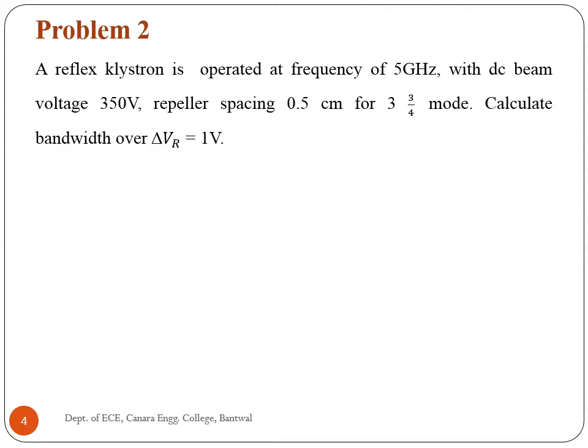Second problem: a reflex klystron is operated at frequency of 5 gigahertz with DC beam voltage 350 volts, repeller spacing 0.5 centimeter, for 3 and 3/4 mode. Calculate bandwidth where delta Vr (rate of change of repeller voltage) is equal to 1 volt.